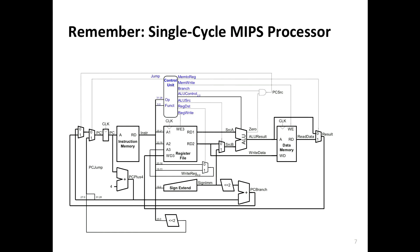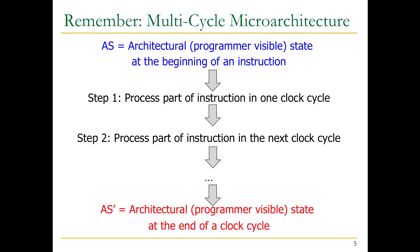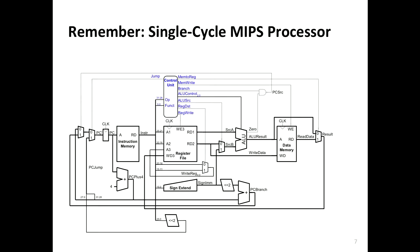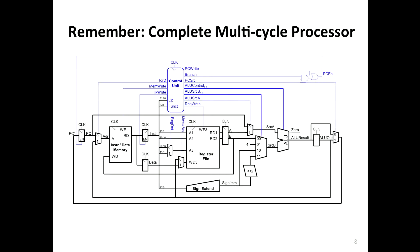We've started covering one example multi-cycle microarchitecture. We took the single-cycle MIPS processor and rebuilt it to be multi-cycle. The single-cycle design doesn't have any internal microarchitectural registers — only the program counter, the register file, and memory as architectural state. We added internal registers so that you could do a step, stop processing the instruction, and then do the next step in the next cycle. These registers were the cost we paid to do things in multiple cycles — everything comes at a cost.